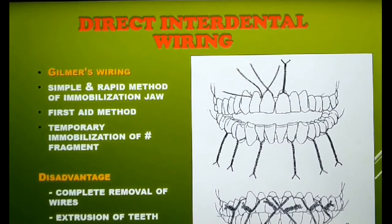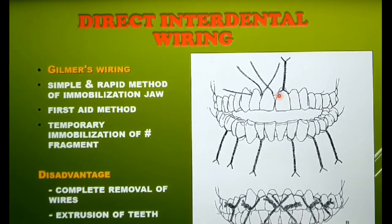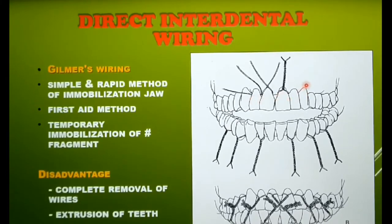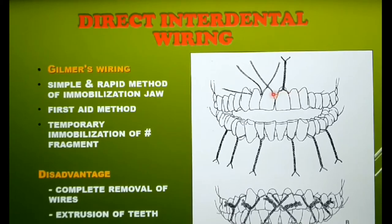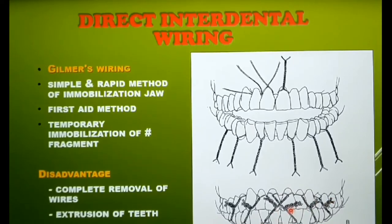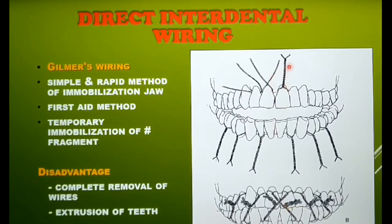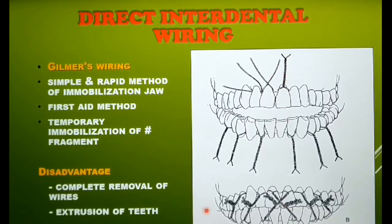Direct interdental wiring, or Gilmer's technique, is a simple and rapid method of jaw immobilization. A 15 cm long pre-stretched stainless steel wire is passed around each tooth, emerging through the interdental space. The wire is placed around the necks of the teeth and the two ends are twisted and tightened. This is performed on both arches, and the opposite wirings are twisted together to accomplish maxillomandibular fixation. The main disadvantage is that if one wiring breaks or needs tightening, the entire wiring has to be removed. Extrusion of teeth is another disadvantage.